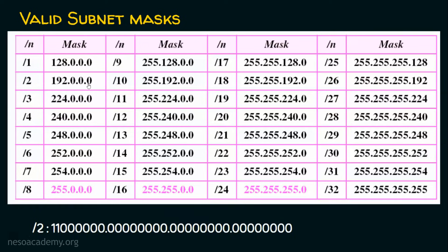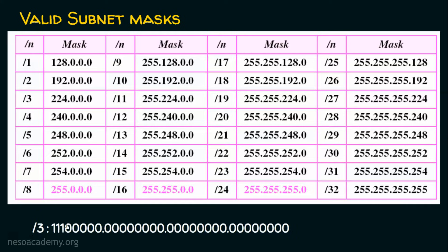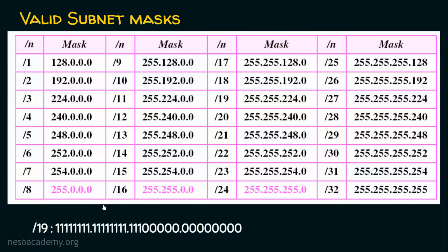The subnet mask in IPv4 is 32 bits, so it can range from /1 to /32. Notably, /8 corresponds to the class A subnet mask, /16 to class B, and /24 to class C. For example, /19 means 19 ones followed by zeros — the first two octets are all ones (8 + 8 = 16), and 3 more ones are placed in the third octet.